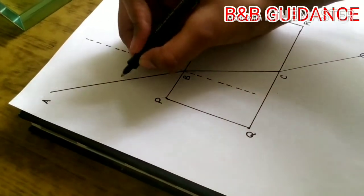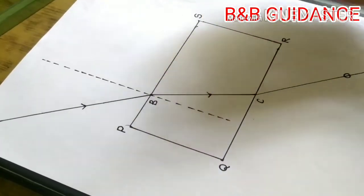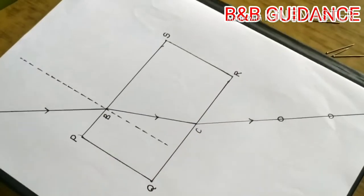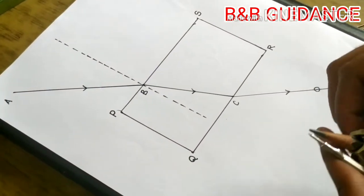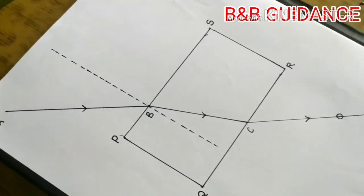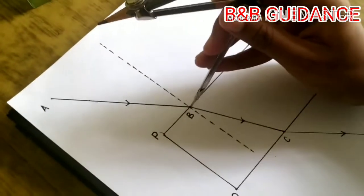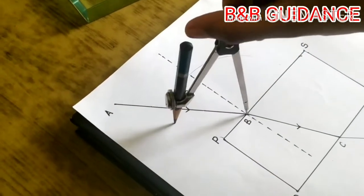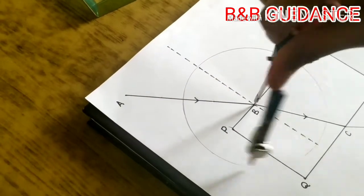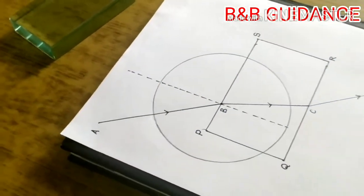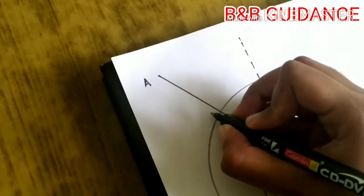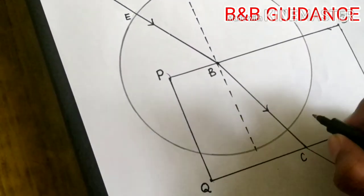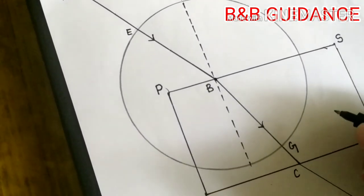Here AB is the incident ray, BC is the refracted ray and CD is the emergent ray. So it should be represented by an arrow mark which shows its direction. Then taking a compass, we must make a circle of convenient radius taking B as the center of the circle. And this circle must intersect the incident ray AB and the refracted ray BC. So the point where the incident ray intersects a circle is named here as E and the point where the refracted ray meets a circle is named here as G.